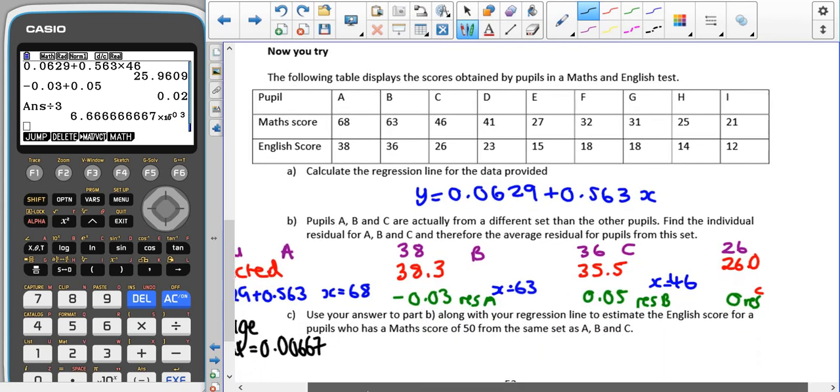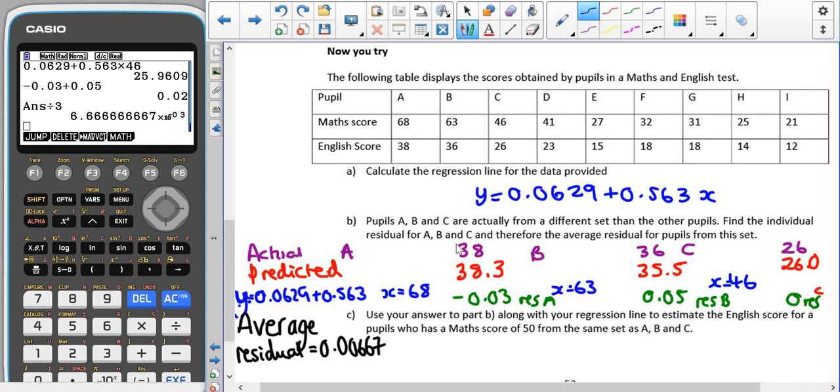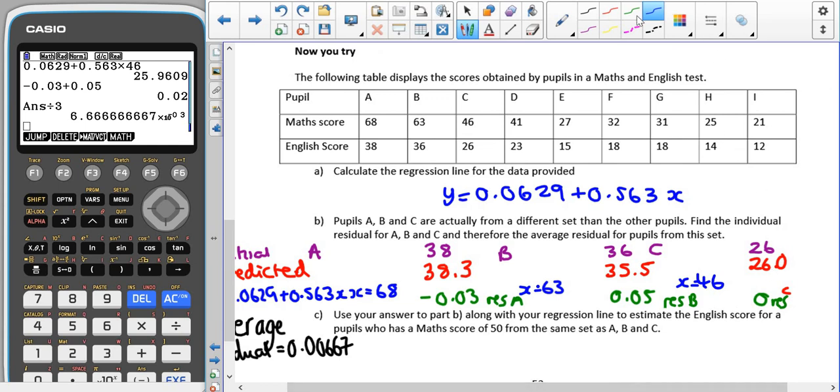When calculating our residuals: for A, the actual value is 38. The predicted value by putting x equals 68 into our equation gets us 38.3, which gives us minus 0.03 as our residual for A. For B, we've got our actual value of 36. Putting 63 into our x gives us a predicted value of 35.5, which gives us a residual of 0.05.